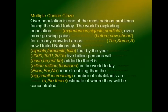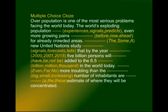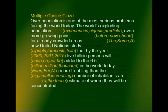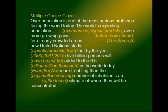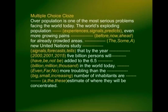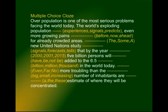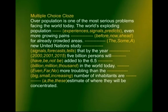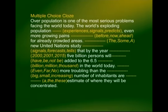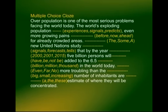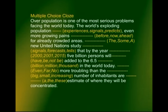The next sentence begins with a word and you have three choices: 'even,' 'far,' or 'no.' You cannot have 'no,' so it has to be either 'even' or 'far.' Then: 'the big — small — increasing number of inhabitants and an estimate of where they will be concentrated.' You do this exercise on your own — I shall not help you with it.